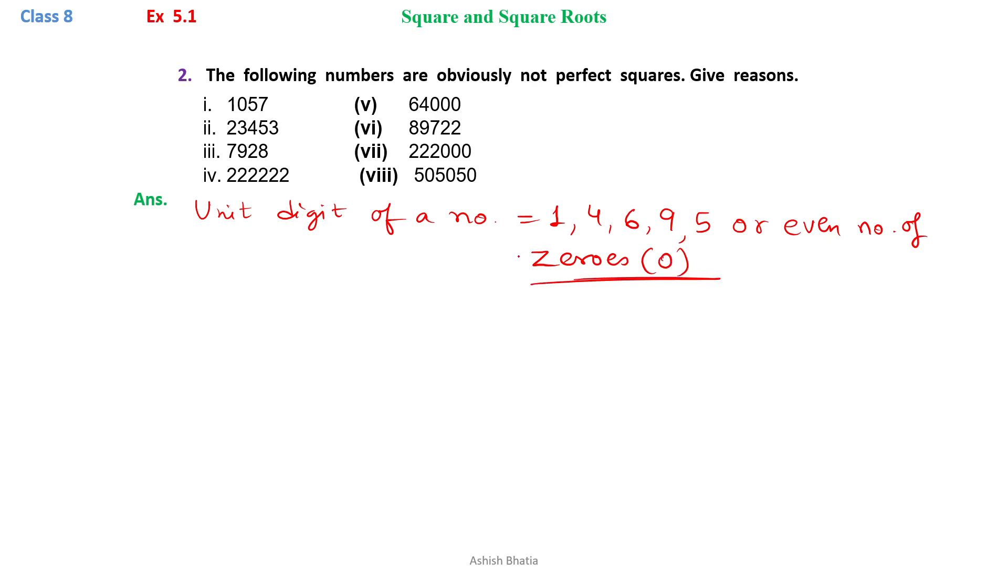This is an identification for a square number. As we can see, the first number is 1057. We have to check the unit digit. The unit digit is 7.